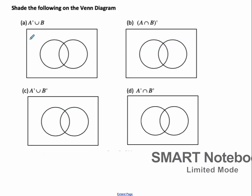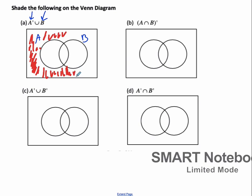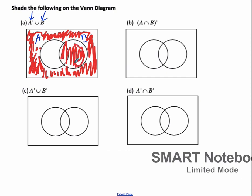Let's look at shading some Venn diagrams. This is not A union B — those are things that are not in A or in B. So we shade all of A first, then all of B for a union. Not A is everything outside of this circle, so shade all that. Then shade everything that's in B. So this is not A union B.